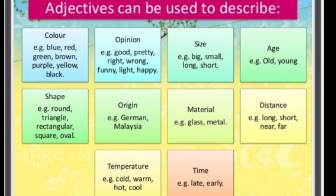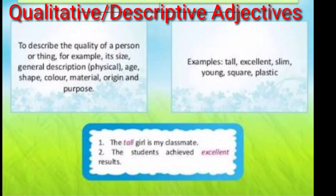An adjective can be used to describe color, opinion, size, age, shape, origin, different types of material like glass or metal, distance, and temperature or time like late or early. For color we can say blue, red, green, brown, purple. For opinion we use words like good, pretty, right, wrong, funny, light, happy. For size: big, small, long, short. For age: old, young.